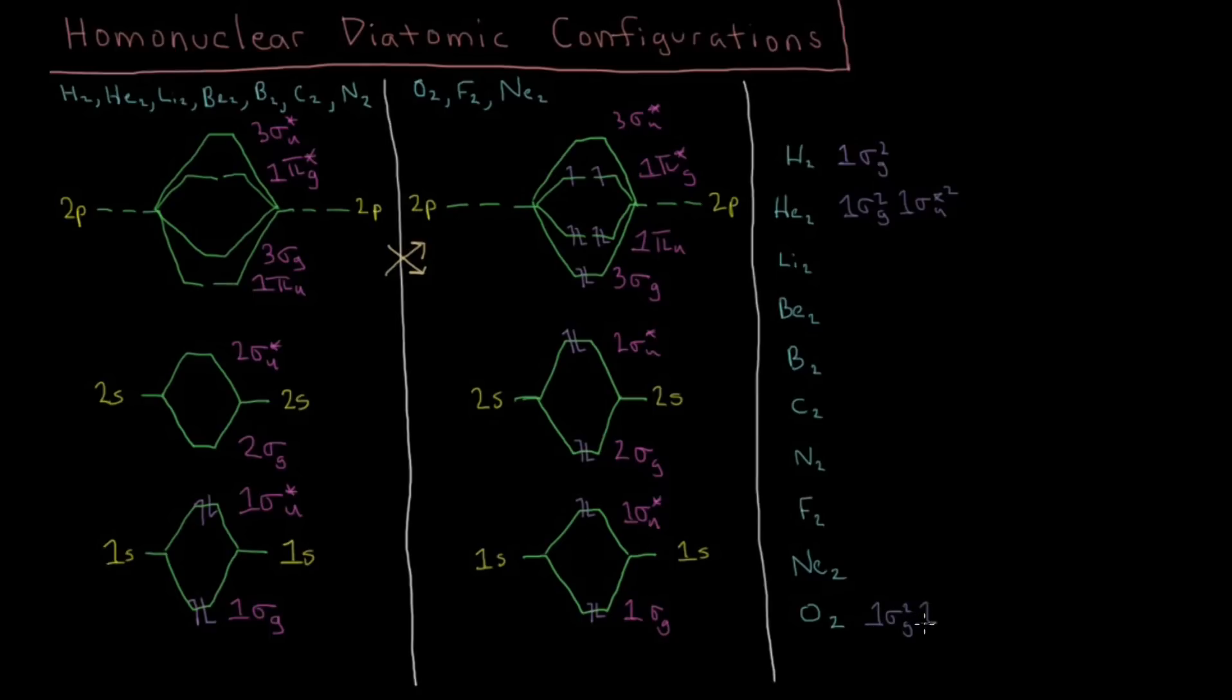1σg2, 1σ*u2, 2σg2, 2σ*u2. Then we go up to 3σg2, continuing on the next line together. We have 1πu4, and 1π*g2.